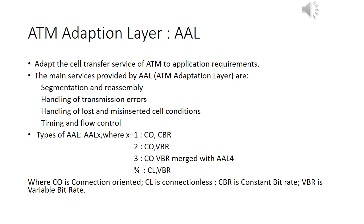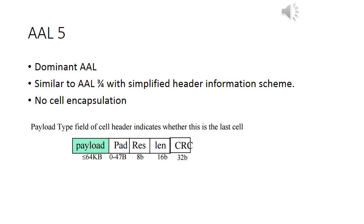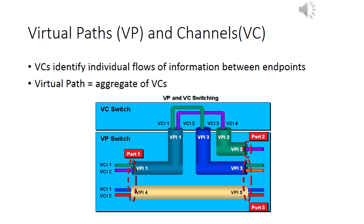There are different ATM Adaptation Layers. Some support constant bit-rate connection-oriented traffic, while some support variable bit-rate connection-oriented as well as connectionless traffic. AAL5 was the dominant one, as it was a simplified version of AAL 3/4. It required no cell encapsulation. ATM networks are basically connection-oriented, so virtual connections are established.